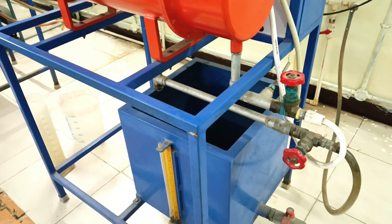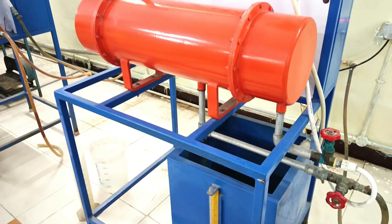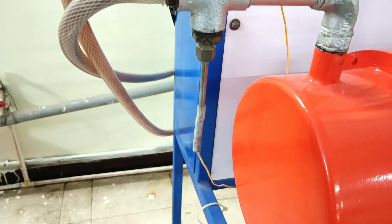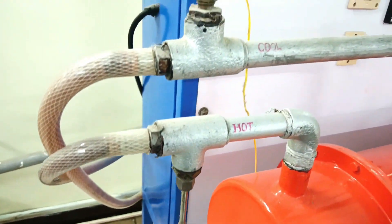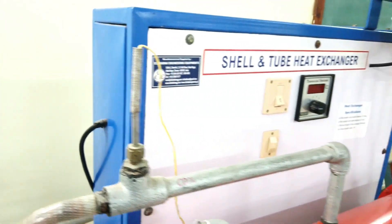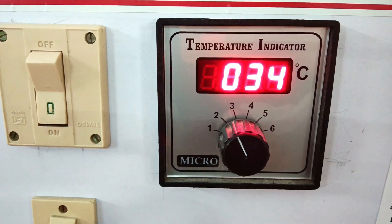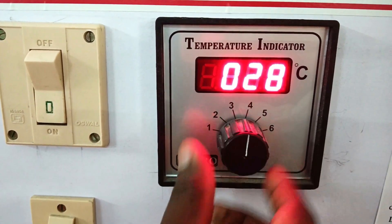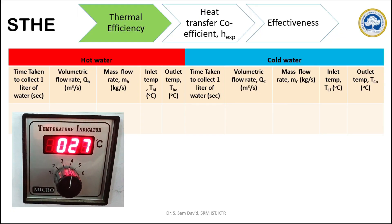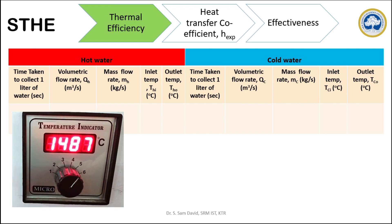In this shell and tube heat exchanger, hot water and cold water will be sent in a counter-current way. Thermocouples are fixed at the inlet and outlet of the cold and hot water to monitor the temperature. By rotating this knob, we can see the thermocouple readings accordingly. Once the system attains steady state, the steady state temperature readings can be noted down.